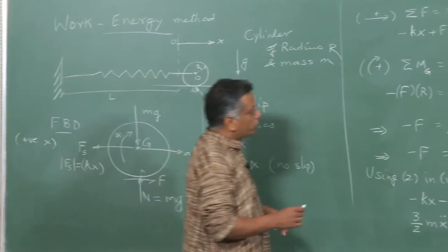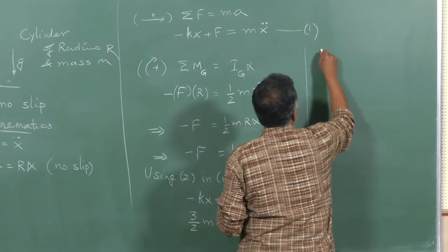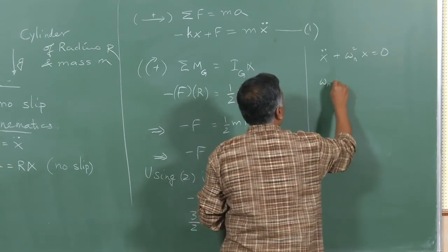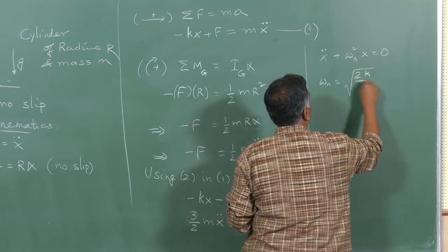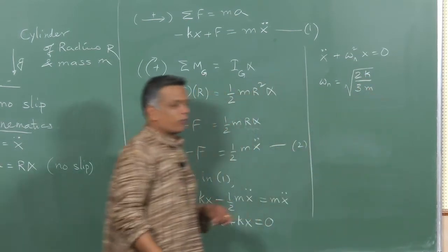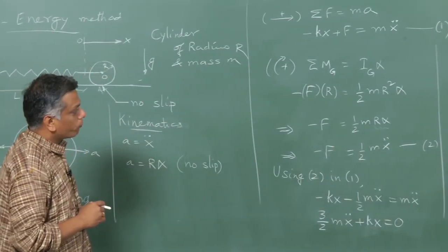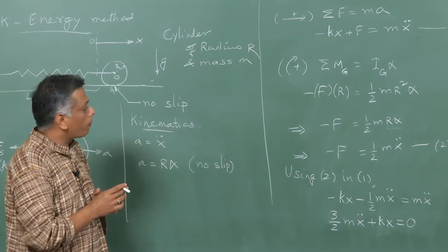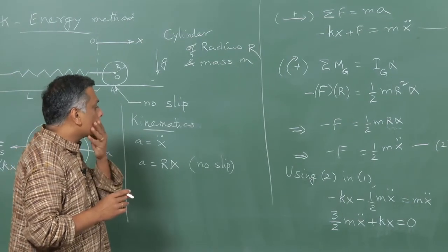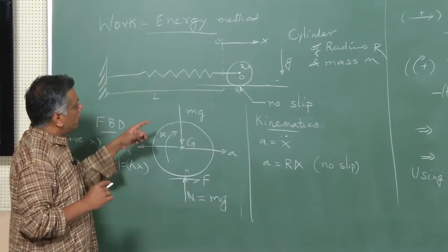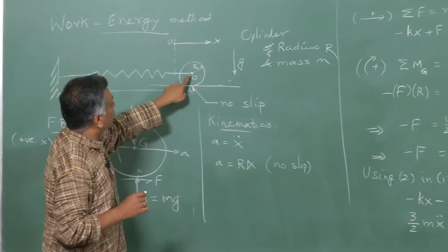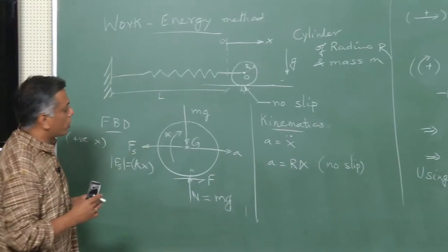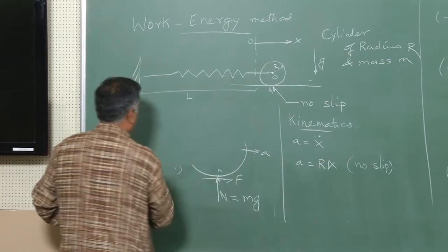So let us complete this calculation. If I write this in the standard form of an undamped oscillator, we find that ω_n now has a factor of two-thirds underneath the radical — so it is a lower natural frequency for the same mass. Now if I look at the instantaneous translational velocity of this body, let us see if we can do the same kind of work energy calculation for this system as well.